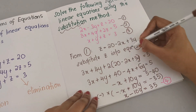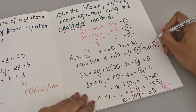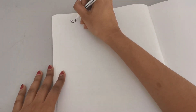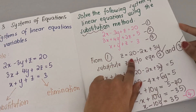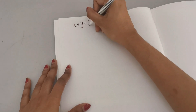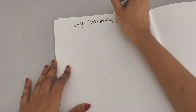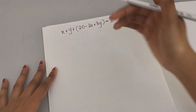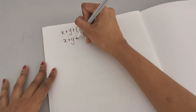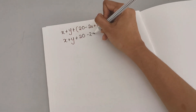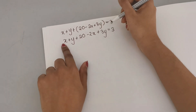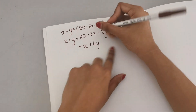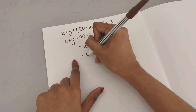Now substitute z into equation 3. x plus y plus z, where z is 20 minus 2x plus 3y, equals 3. Expanding: x plus y plus 20 minus 2x plus 3y equals 3. So x minus 2x is negative x, and y plus 3y is 4y. Bringing 20 over gives negative x plus 4y equals 3 minus 20, which is negative 17.